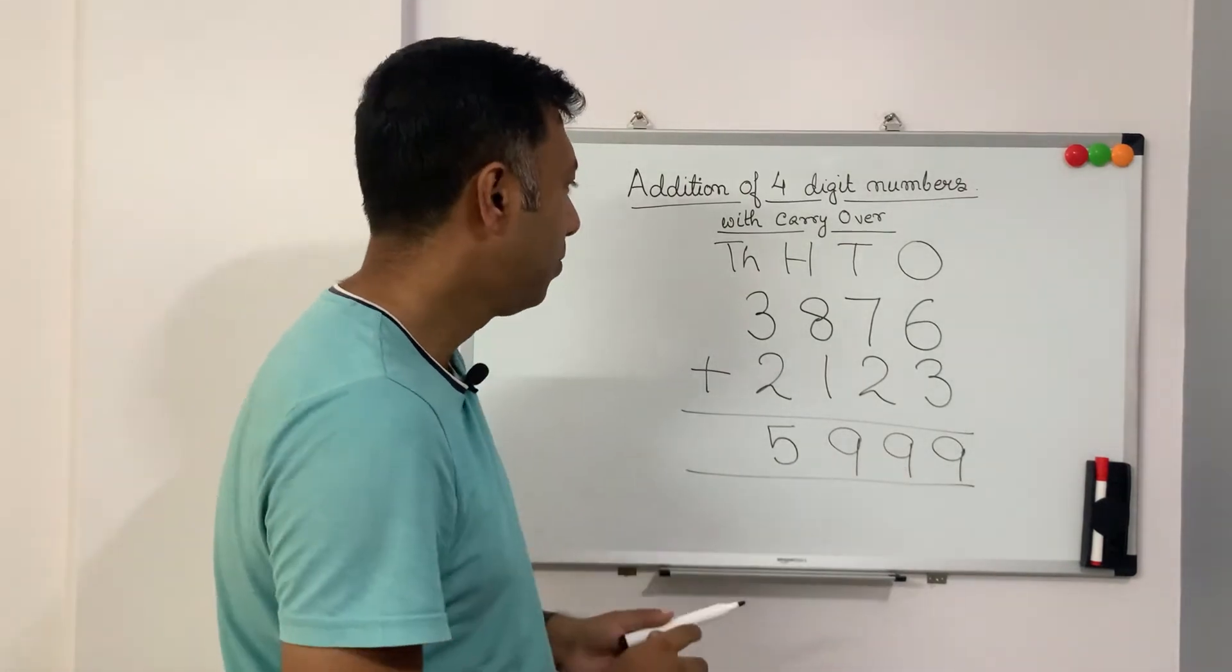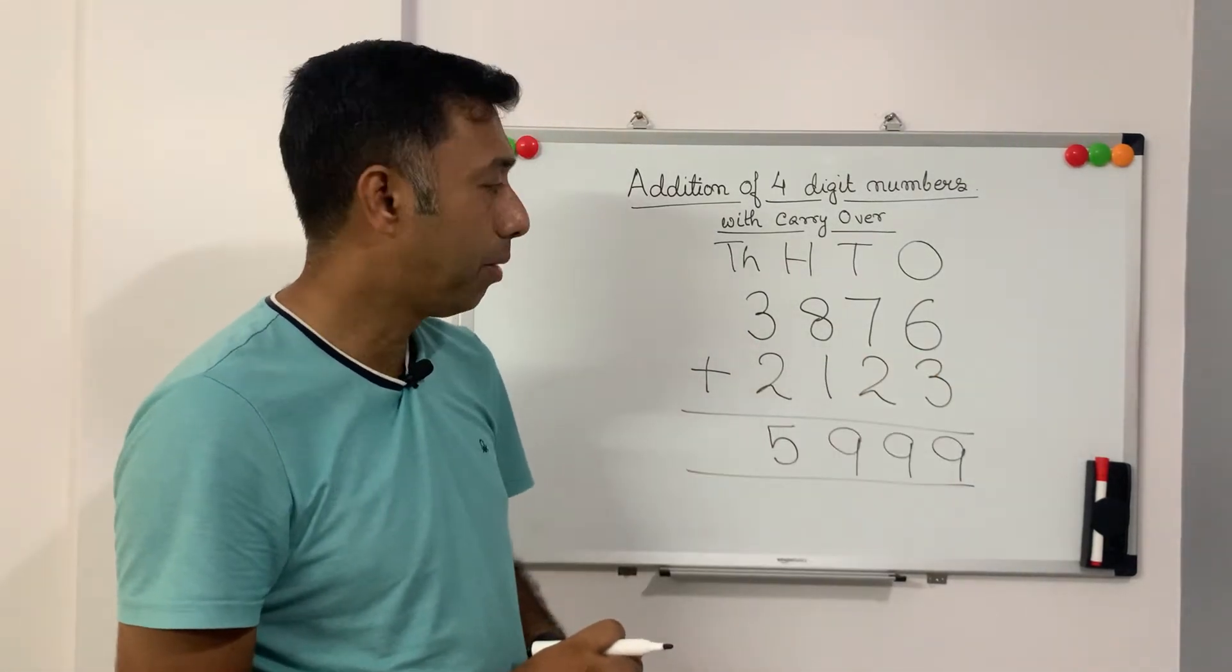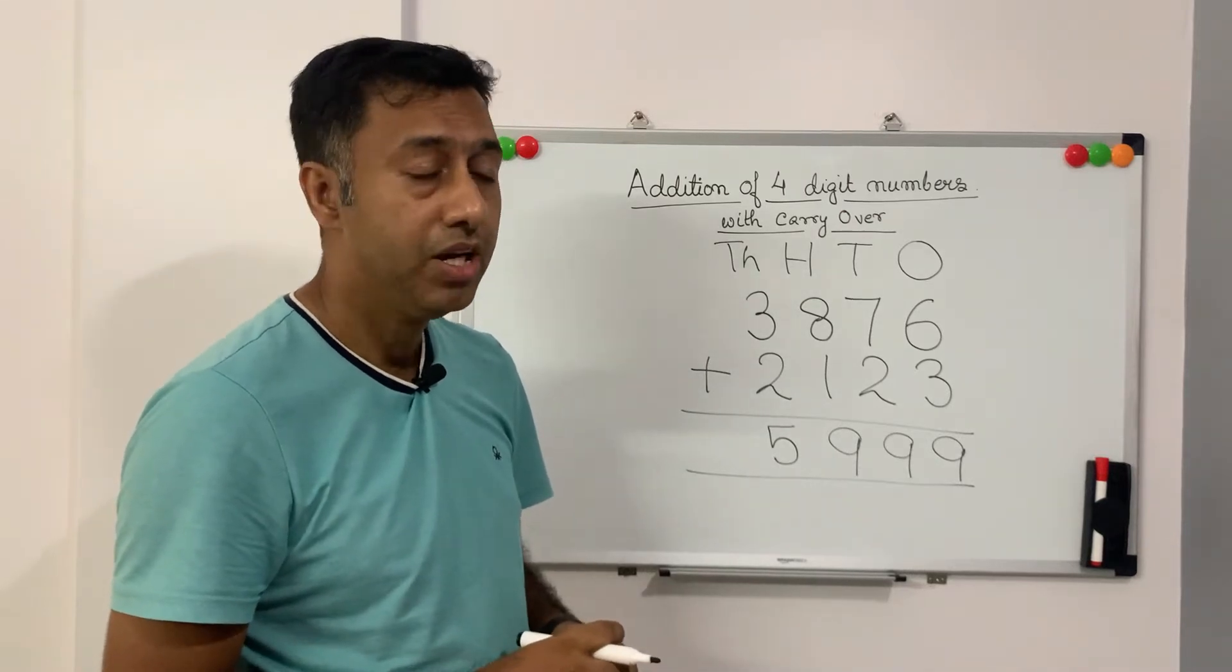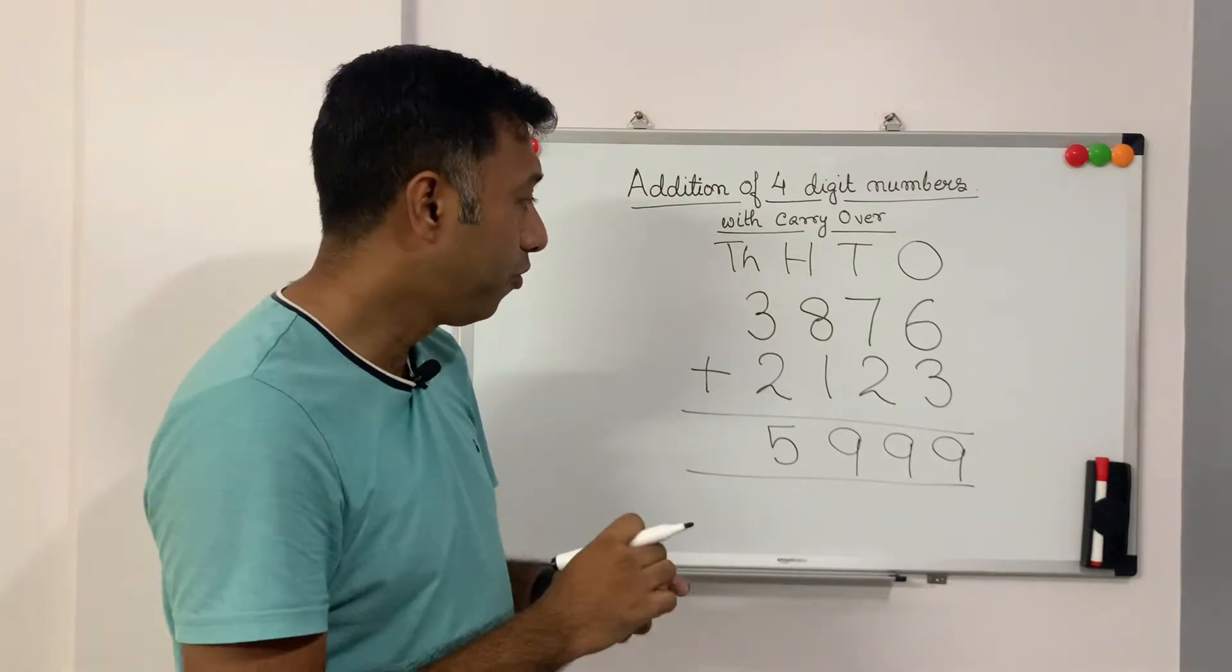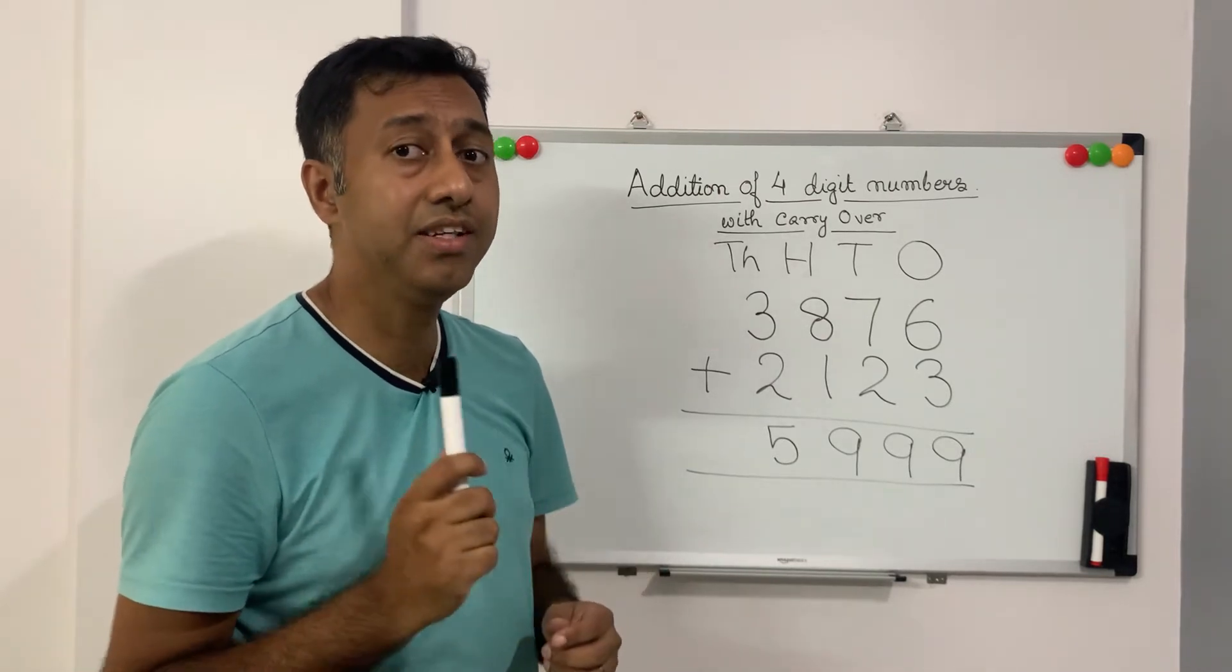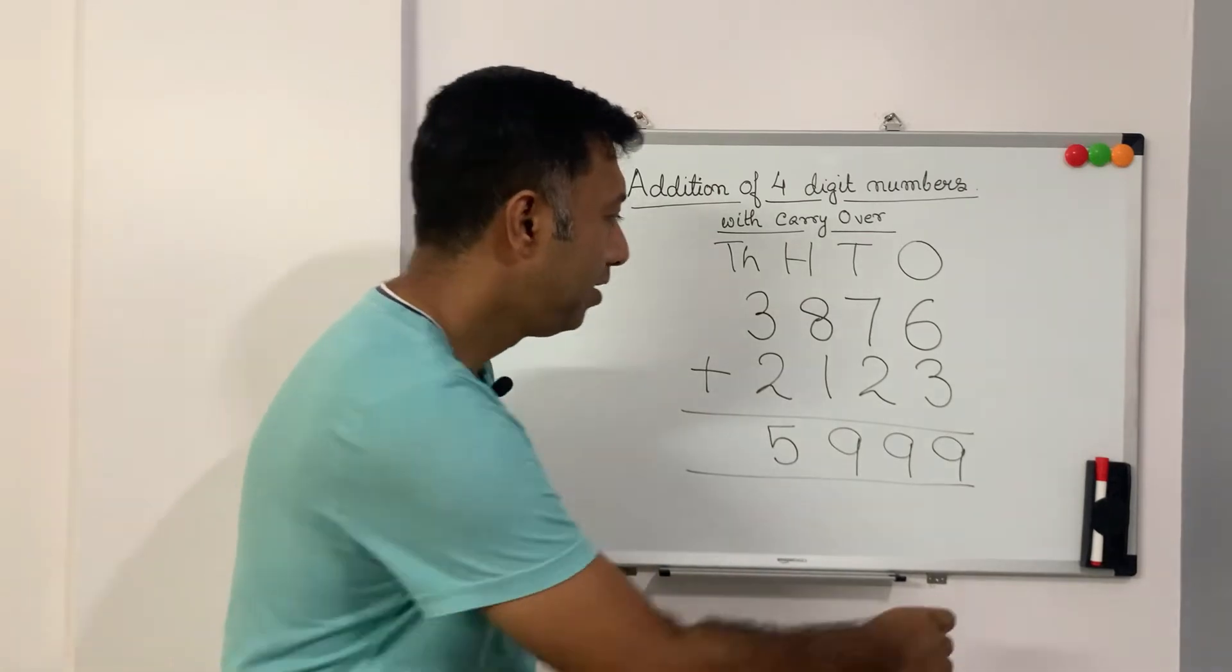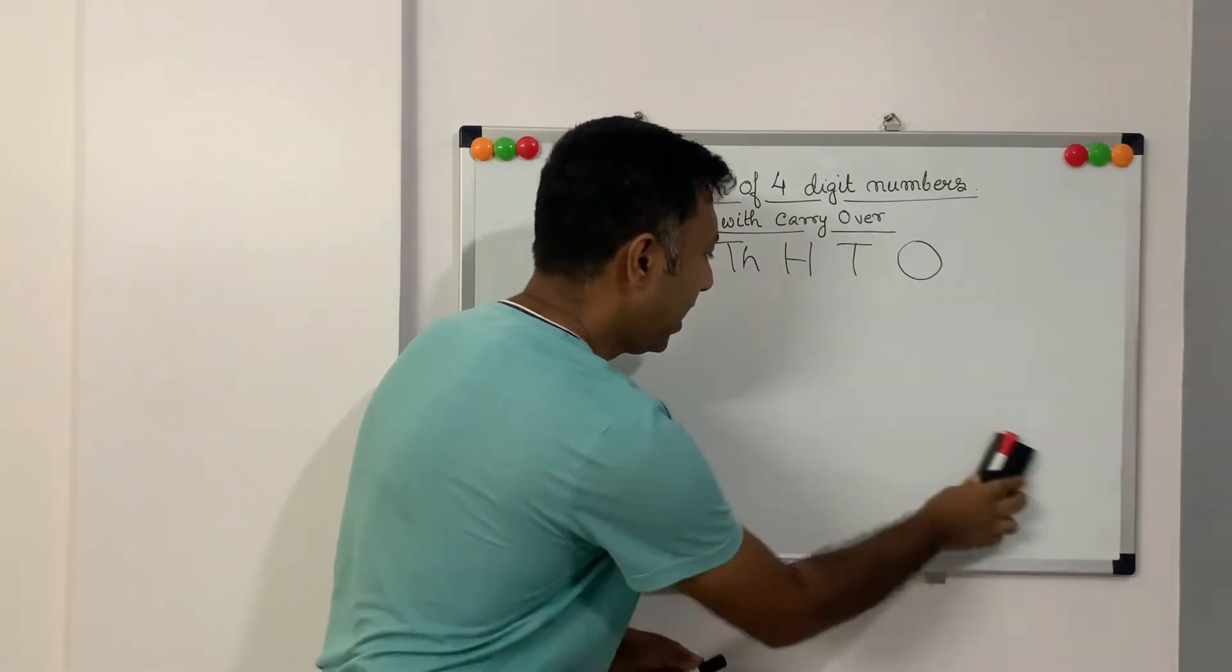Now, what if the addition of a particular two numbers is more than 9? Then what do we do? So that is what we will discuss in today's session. So before we proceed, make sure you have your notebook, a pencil and an eraser with you. Okay, quickly go and get it. While you go, let me write down the numbers that we are going to add.